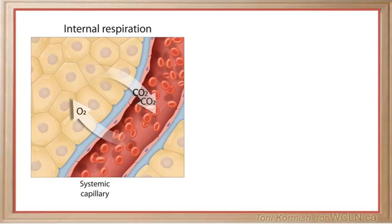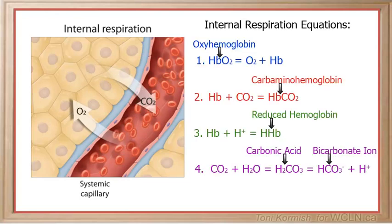Be aware that some carbon dioxide does diffuse out of the tissues into the bloodstream and simply travels to the lungs in the form of dissolved carbon dioxide. With the exception of dissolved carbon dioxide, the four formulas listed here are the exact opposite of external respiration. Get to know external respiration really well and then just reverse it for internal respiration.